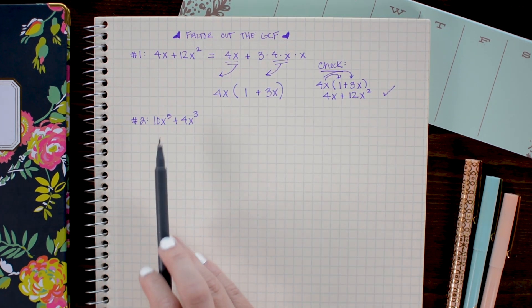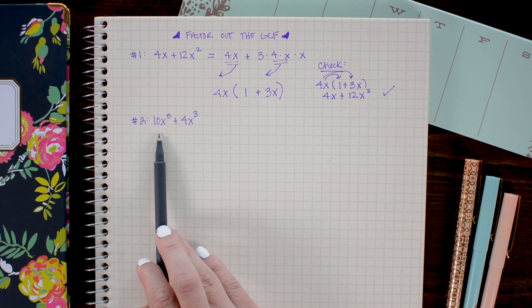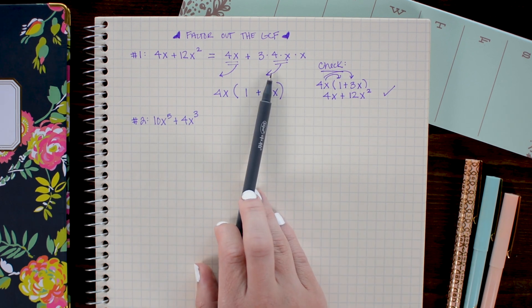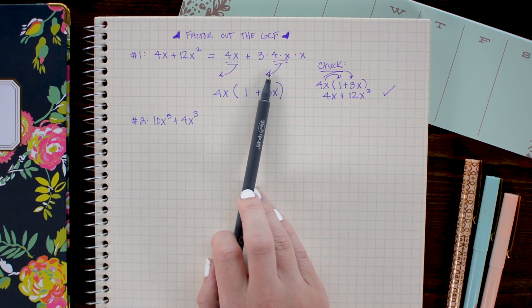In the second problem, we want to factor out the GCF of 10x to the fifth plus 4x cubed. Now an alternate way to do this, if you don't like writing out the expanded form, is to divide.